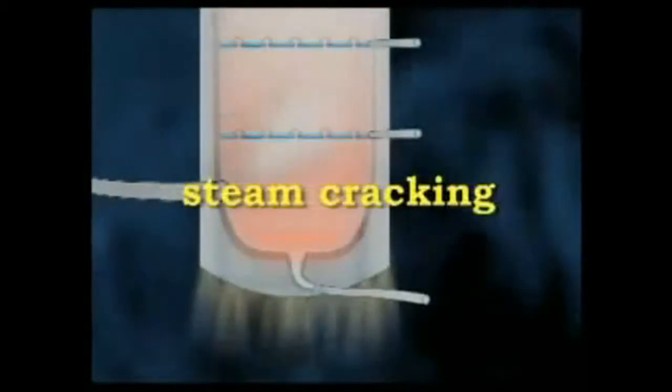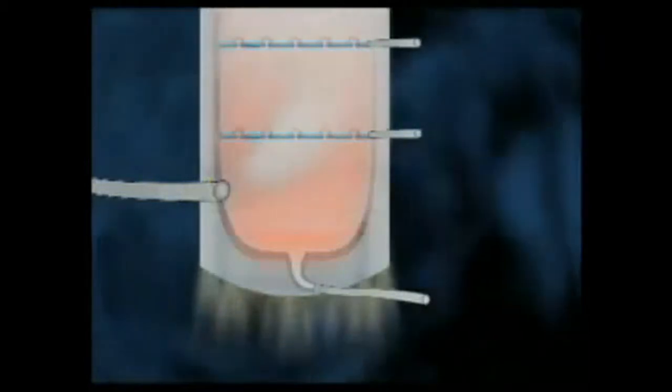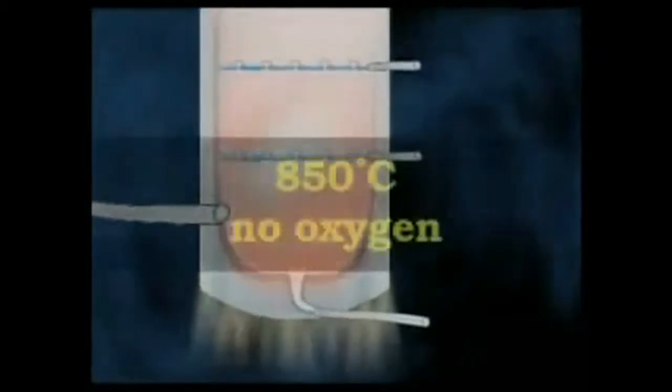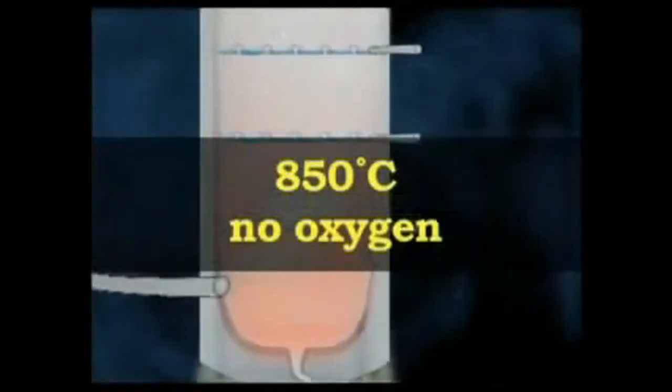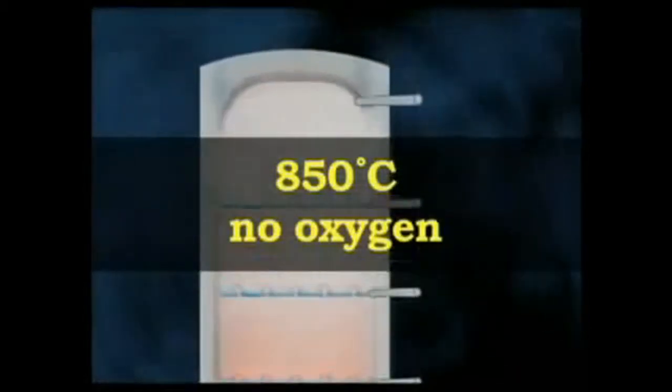In one method, thermal steam cracking, the hydrocarbon is diluted with steam and then briefly heated in a very hot furnace, around 850 degrees Celsius, without oxygen. The reaction is only allowed to take place very briefly.